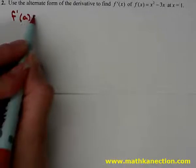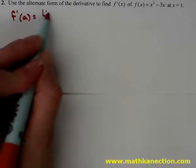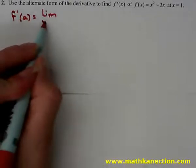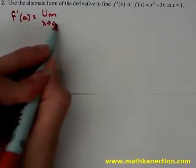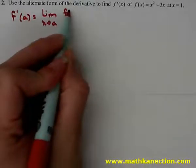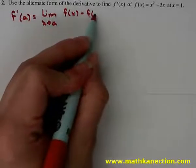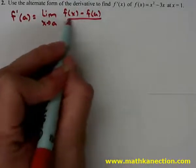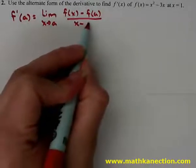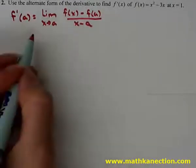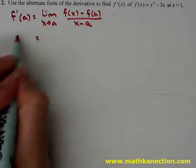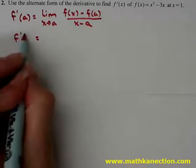Now we're going to use the alternate form to find the derivative of f prime of x at x equals 1. The alternate form is: f prime of a is equal to the limit as x approaches a of f of x minus f of a, all over x minus a.